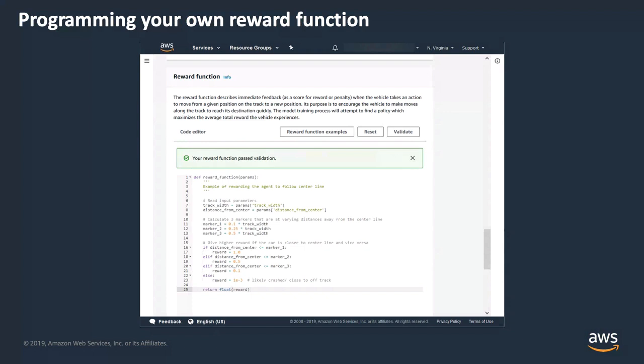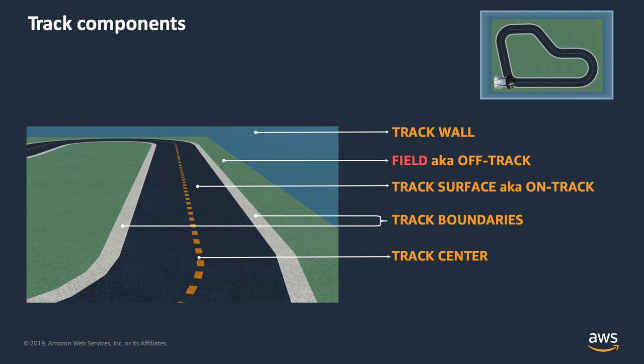This is the first person view of AWS DeepRacer as it drives down a track. The main components of the track are the track wall, the field or off-track, the track surface or on-track — which includes the two boundaries — and the center of the track. These components are important because we can use them to help determine whether an action resulted in a good or bad outcome.